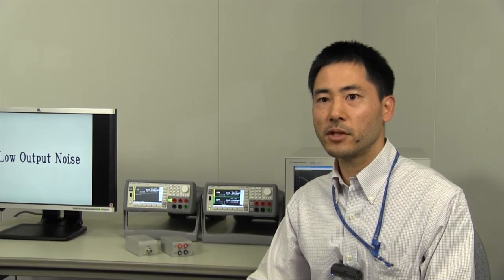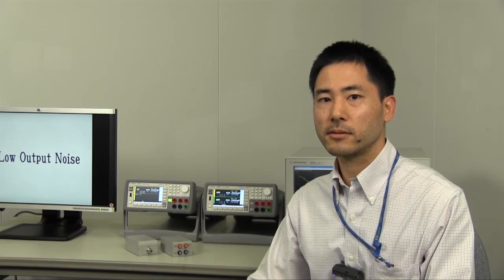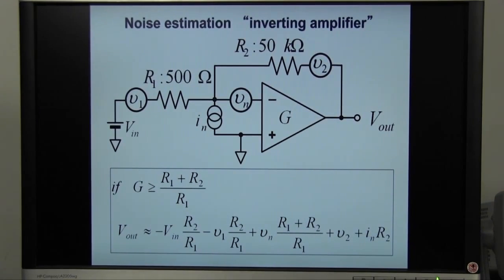Let's pick up a simple inverting op-amp circuit to tell how to care about the noise. This is the circuit. The gain of this circuit is minus 100. Let's estimate the output noise.